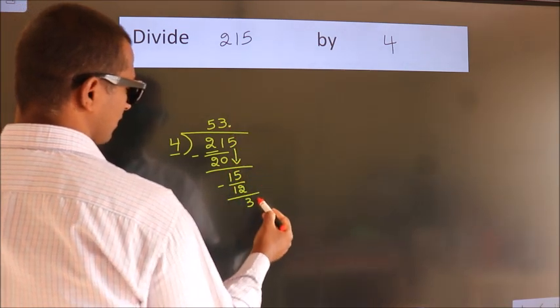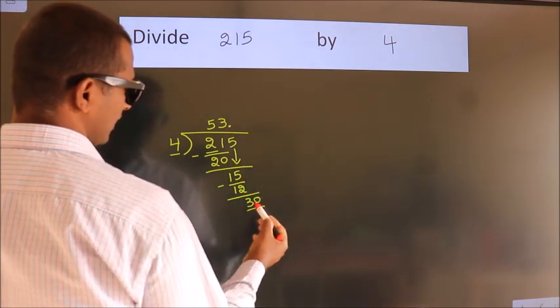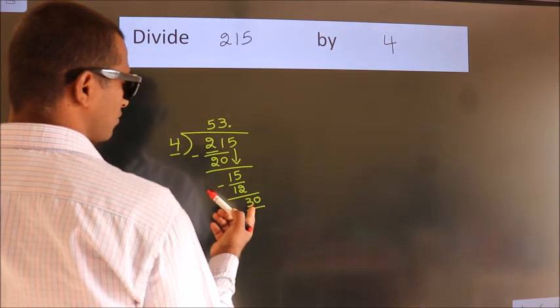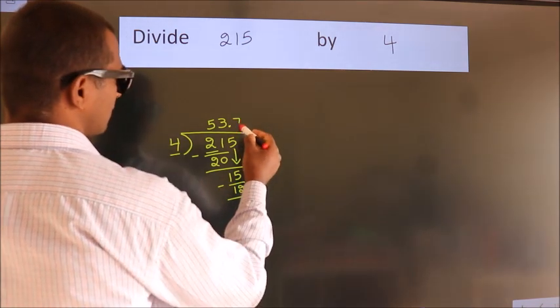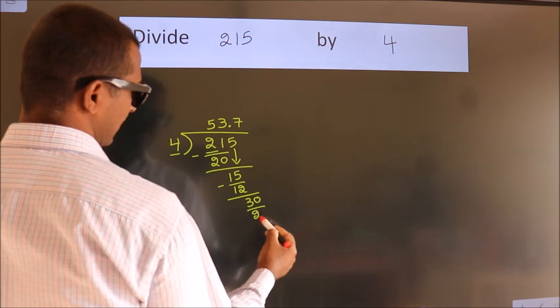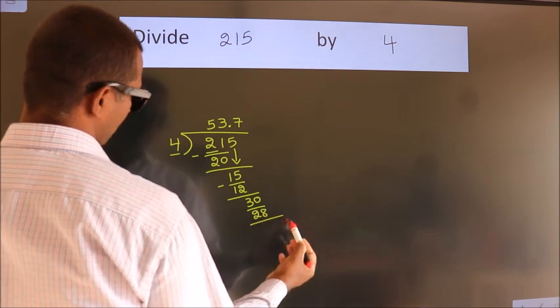We put a dot and take zero. So 30. A number close to 30 in the 4 table is 4 sevens, 28. Now we subtract. We get 2.